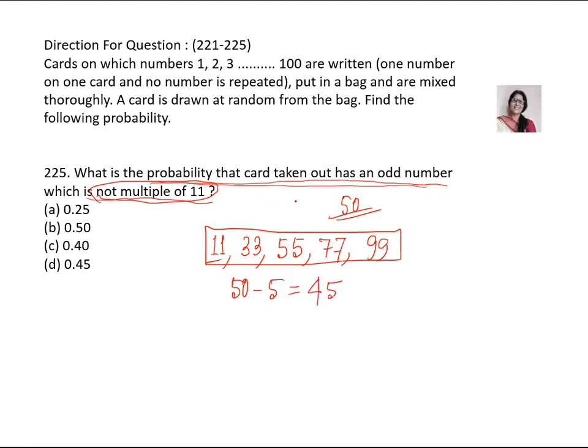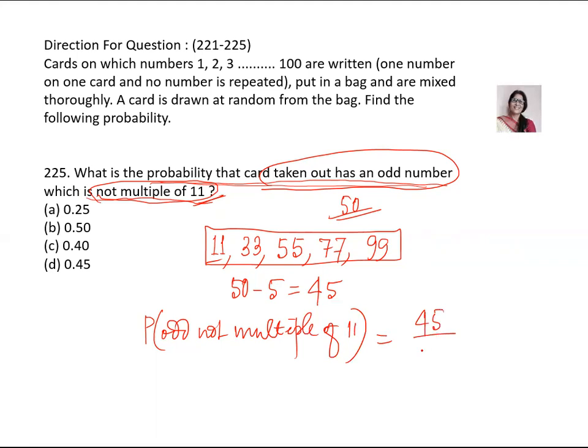So the probability of taking out the odd number not multiple of 11 will be 45. Probability odd not multiple of 11 is equal to 45 upon 100. So how much is this? 0.45. B is answer.